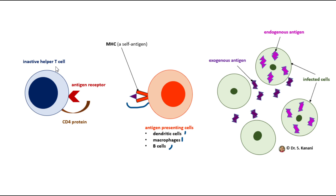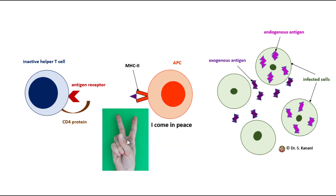Antigen-presenting cells can build two different types of MHC: MHC-1 and MHC-2. The question is, since this cell is not infected, how does it make clear that it is just presenting a complex and not infected? When the antigen-presenting cell tries to clarify that it's coming in peace — that it is not infected, just a messenger — it uses MHC-2.